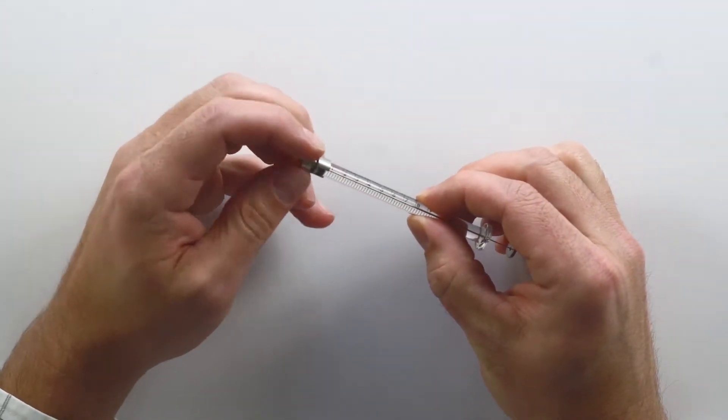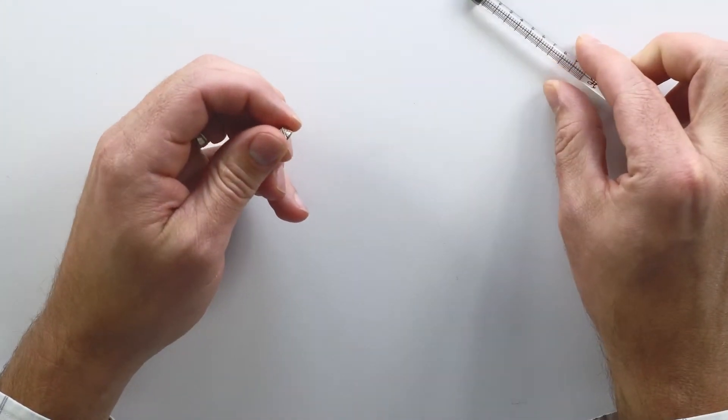Assemble the peak tubing with the syringe by first removing the RN nut, then thread the nut over the peak tubing.